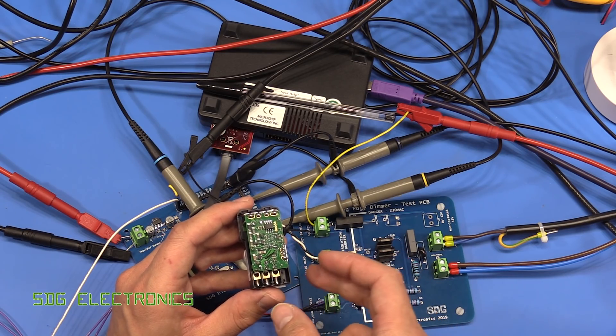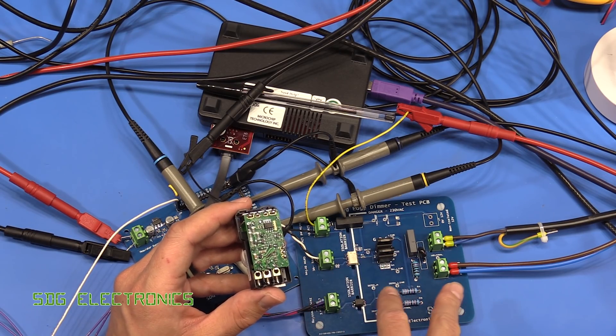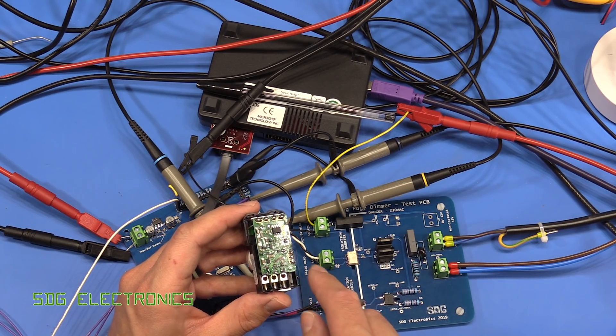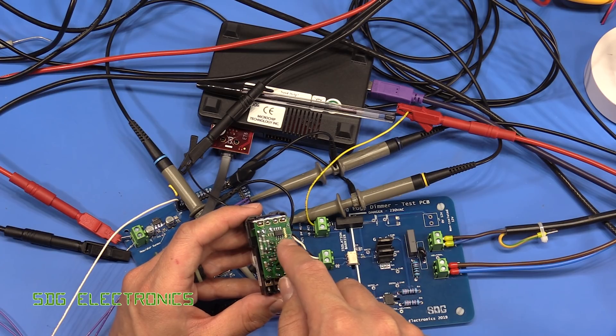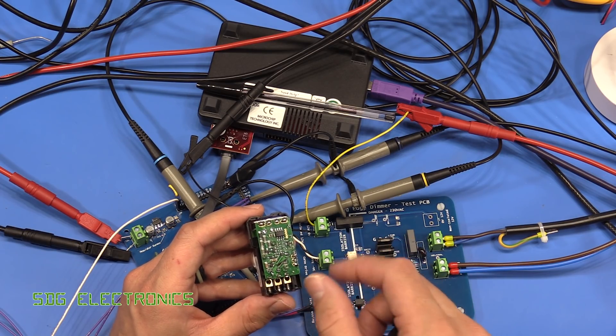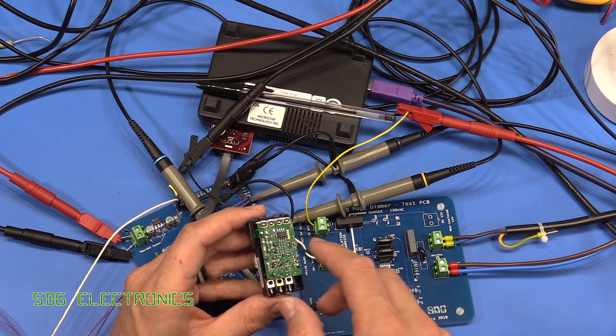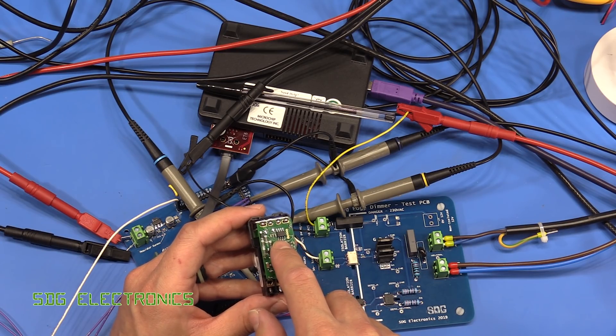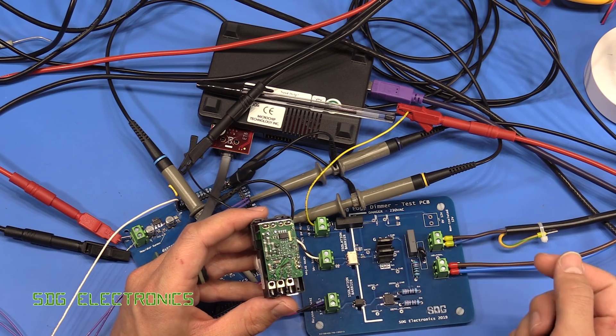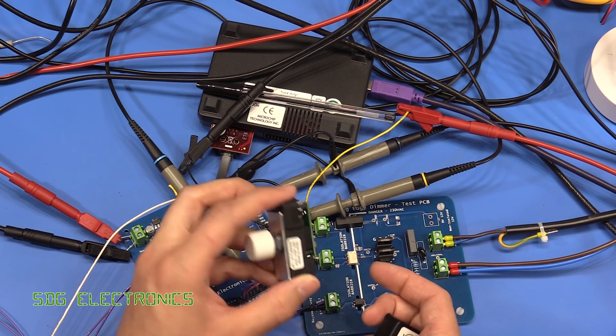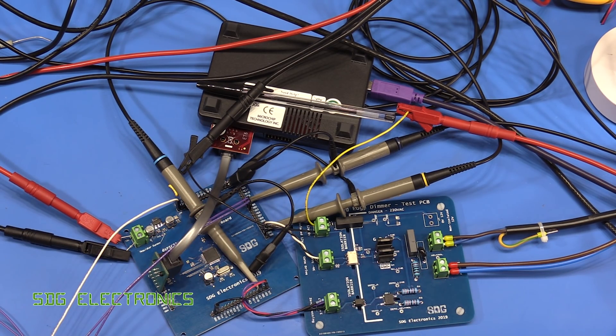The microcontroller is going to be running from the mains as well so you don't need any of this isolation business. All you do is you can feed the AC input directly into one of the pins on the microcontroller just through some serious resistance and either use the ESD protection diodes on the pin or just add a few diodes externally but it means you can just trigger directly without any of this other business involved.